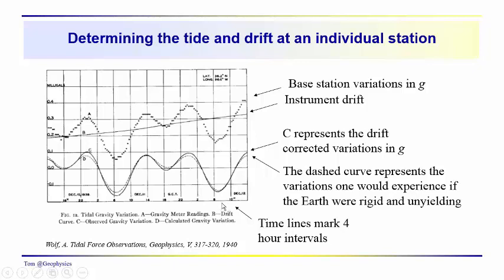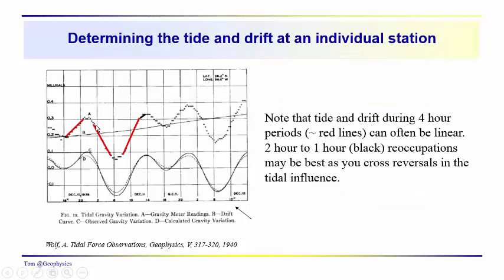These timelines mark intervals of about four hours. Over a four-hour period, the changes are very often going to be linear. However, you typically don't go more than a couple of hours. During the course of your survey, you want to get a feeling for the daily variation in the cycles, and during certain periods there will be errors if you go a couple of hours. So you need to pay attention to how long you stay out and whether you can get by with a longer period between reoccupations or whether you need to reoccupy at shorter intervals — that can actually vary during the course of the day.